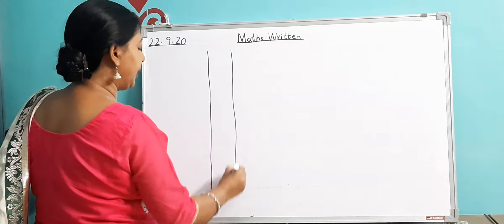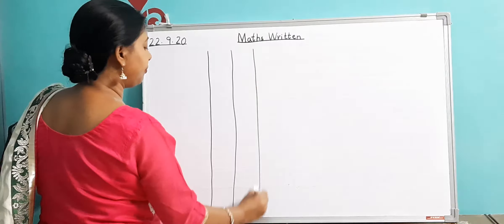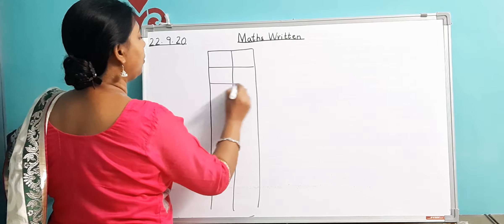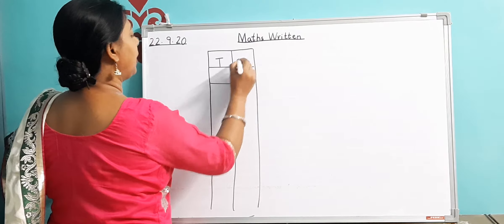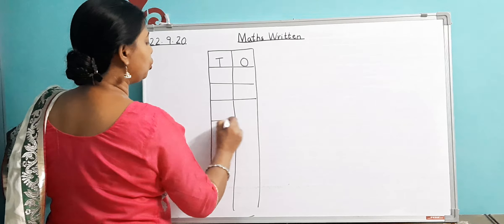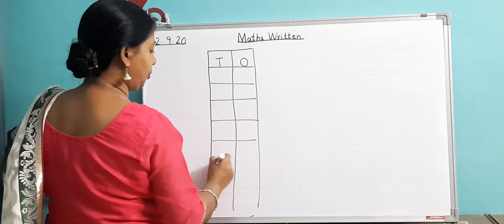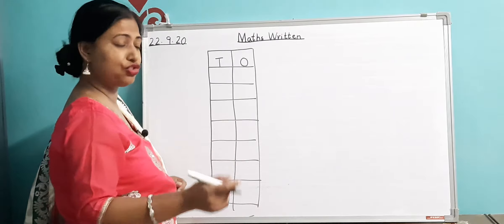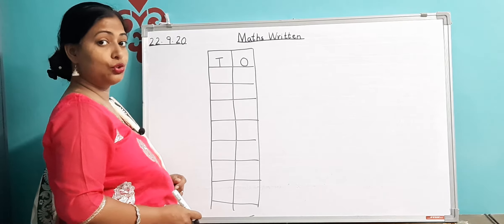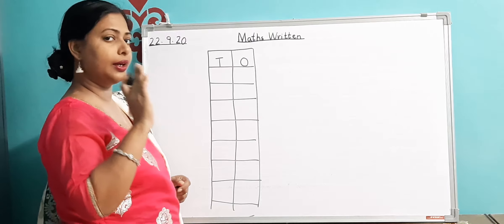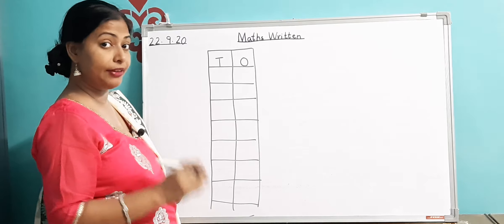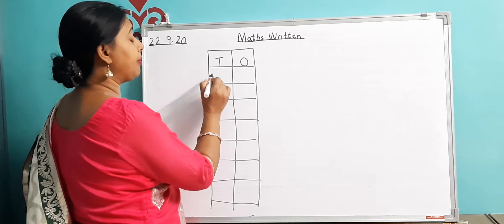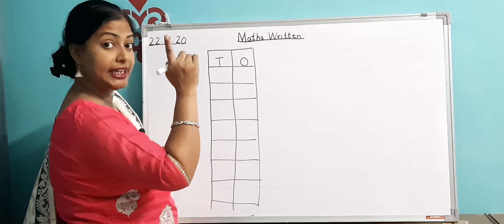The columns will be given — like this, the columns are there. This is the Tens column and this is the Ones column. So you should be able to write the numbers. Like if I say 'write 47,' you should quickly recognize the number. How do you write 47? Remember: when I say 40 and 7, you have to write 40 first.